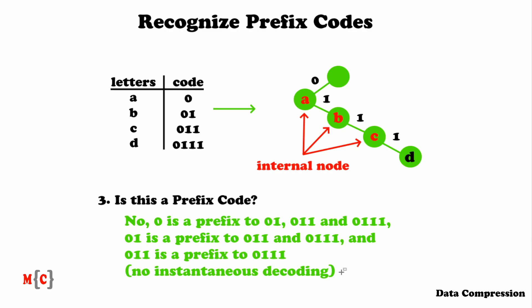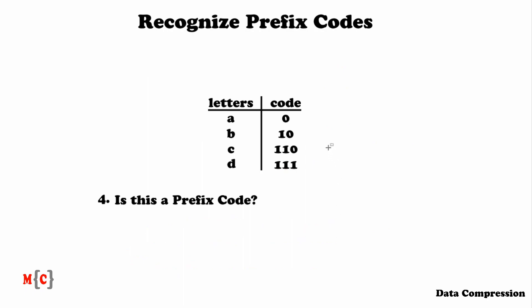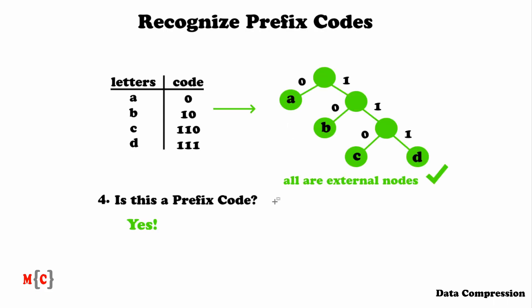Let's go to the last question. The code is: A is 0, B is 10, C is 110, and D is 111. Is this a prefix code? The answer is yes, this is a prefix code. If we draw the binary tree, we see that A, B, C, and D are the leaves — all external nodes. And if we look at the code, no codeword is a prefix to another codeword. So these were the exercises — if you understand each of the answers, you are a master of recognizing prefix codes.